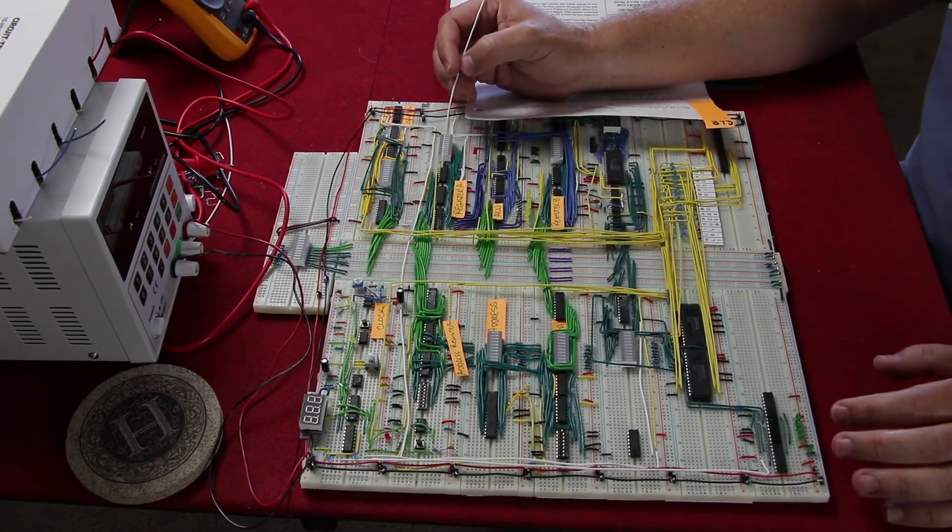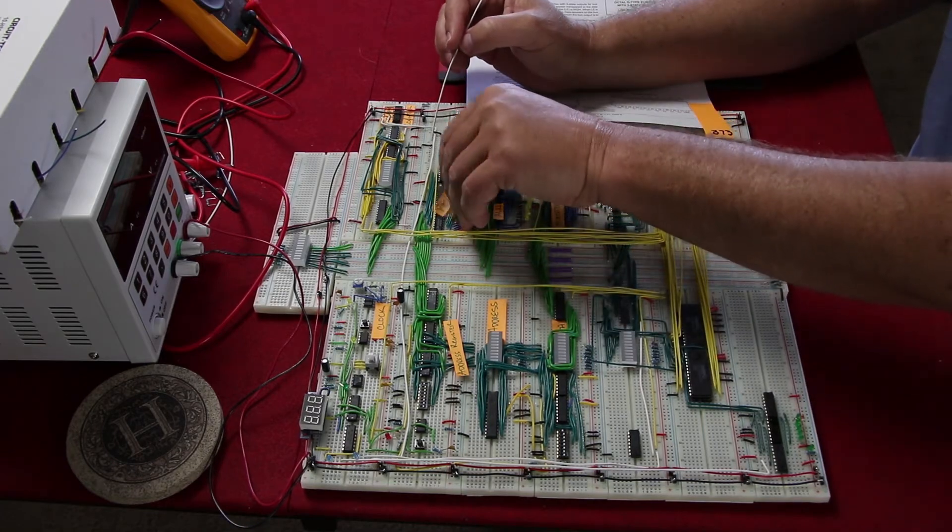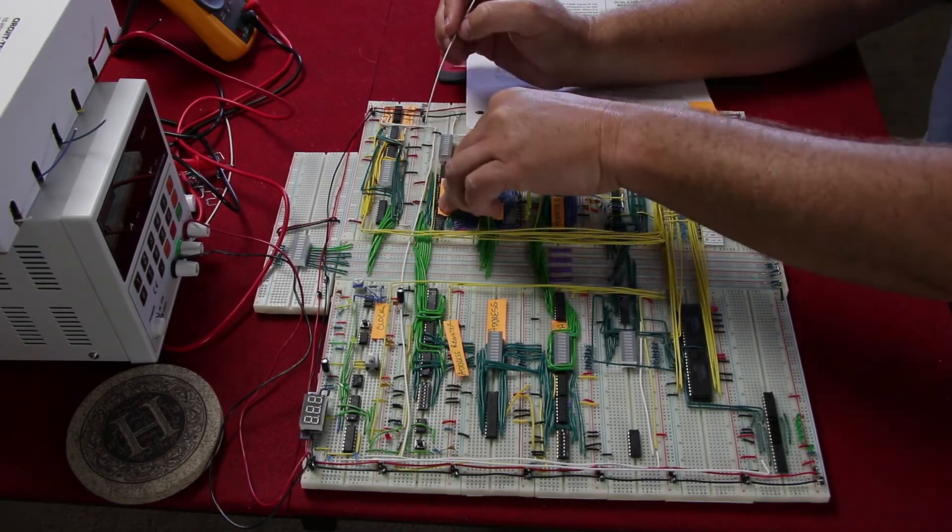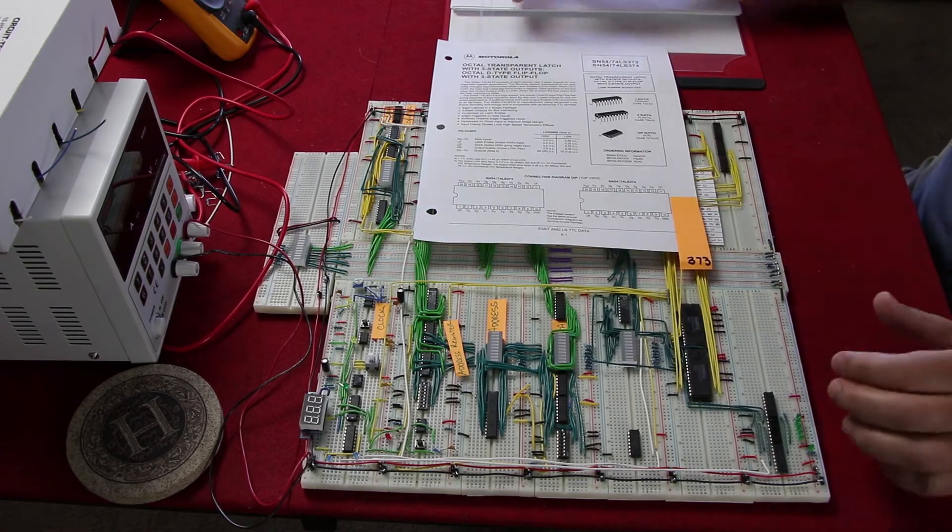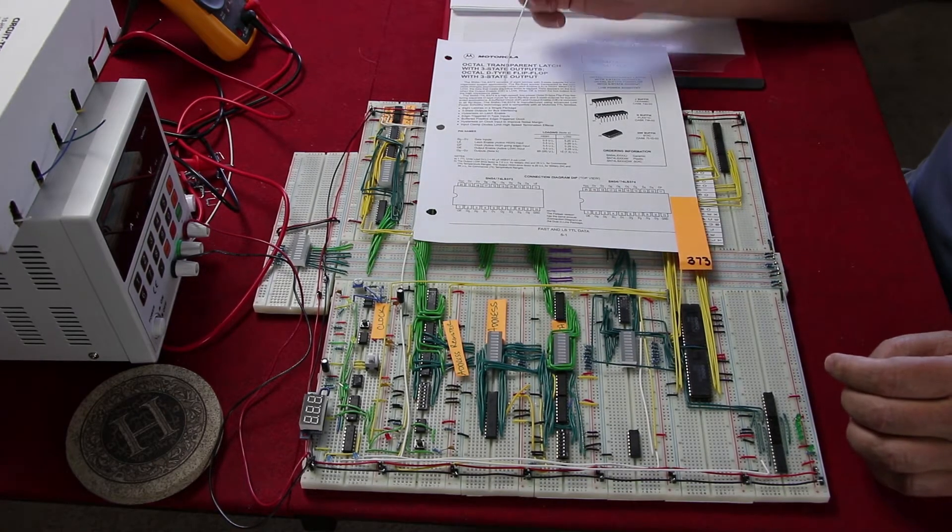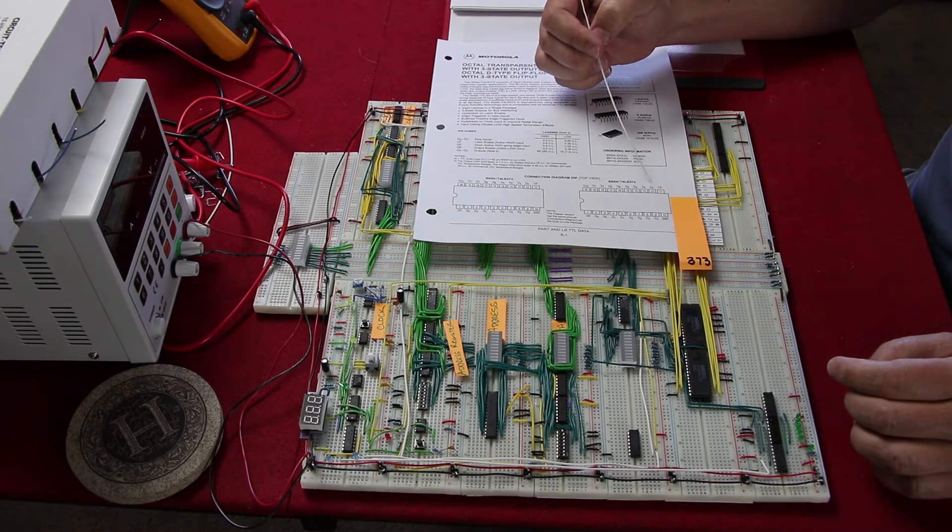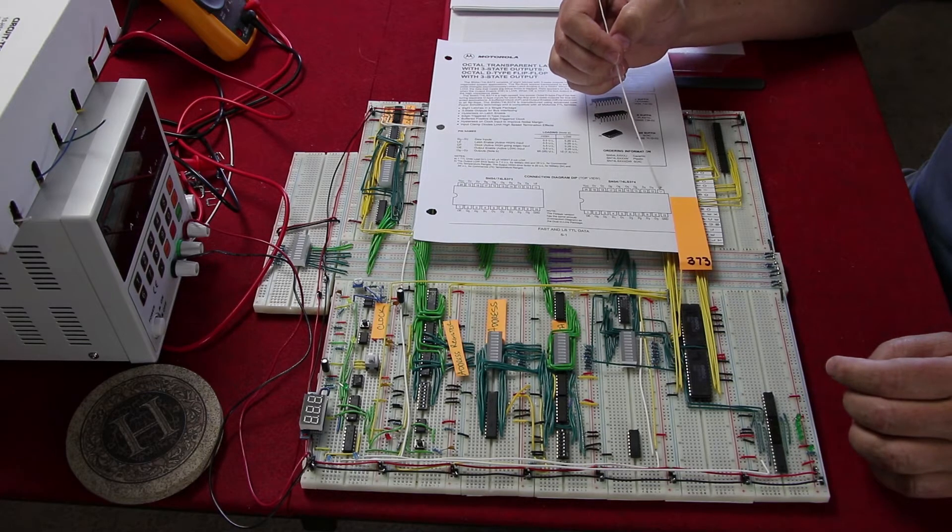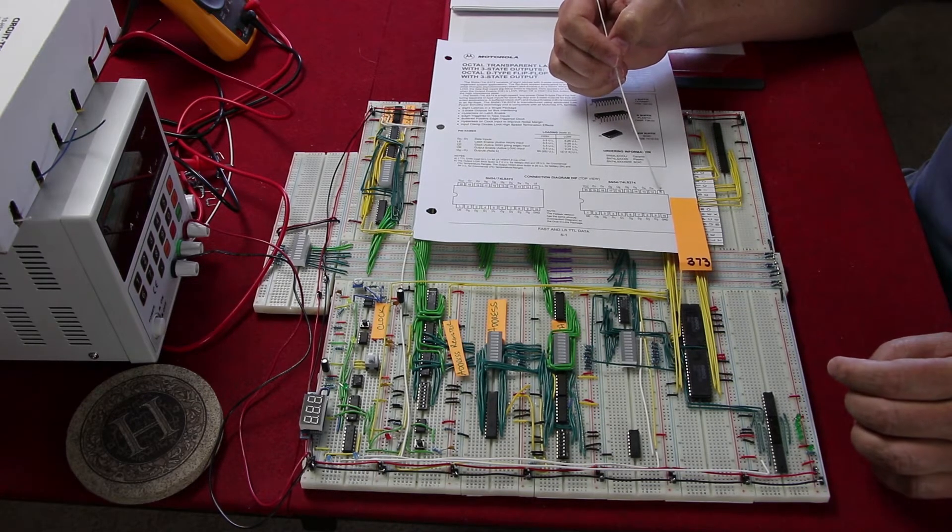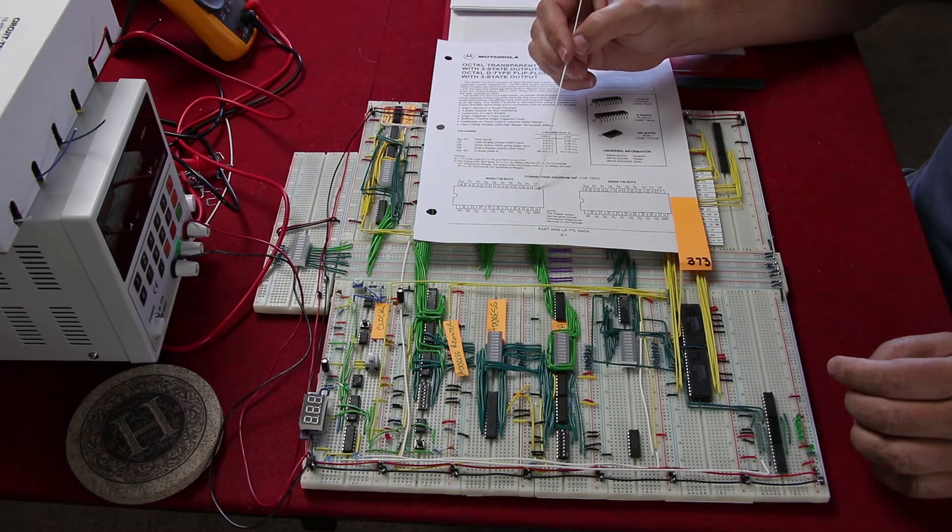So I've got the datasheet here for the 373, an octal transparent latch. You have a 373 and a 374. The 374 varies in that it has a clock pulse instead of a latch enable.